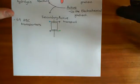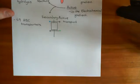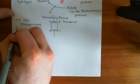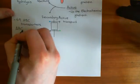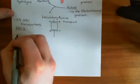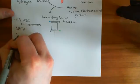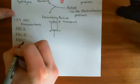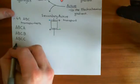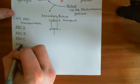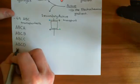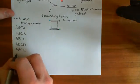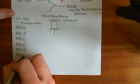Let's talk about how we categorize the 49 different ABC transporters into different families. There are seven different families: ABCA, ABCB, ABCC, ABCD, ABCE, ABCF, and ABCG. We use letters to denote the families rather than numbers.